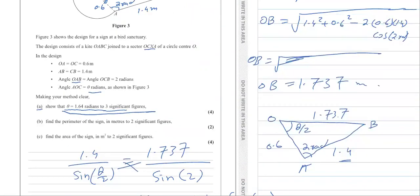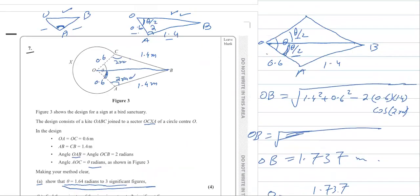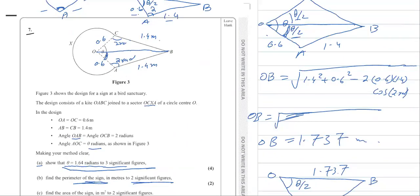Part B asks to find the perimeter of the sign in meters to 2 significant figures. The perimeter is the outer boundary. We know the two sides of length 1.4 each, and we need to find the arc length. For the arc length, we need the central angle, which is 2π minus theta.